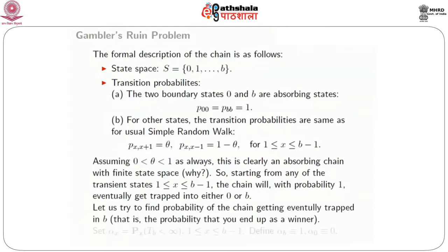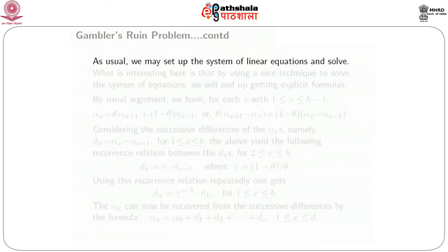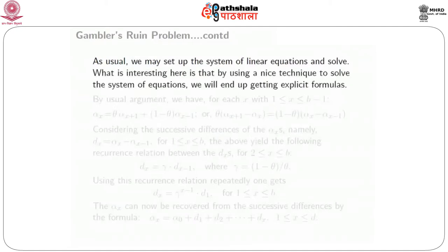Let us find the probability of the chain getting eventually absorbed at b — which means you end up as a winner with net capital b. Set α_x to be the probability that T_b is finite, i.e., the hitting time of b is finite, for x between 1 and b−1. For completeness, define α_b = 1 and α_0 = 0 as boundary conditions. We set up a system of linear equations as for any finite state space absorbing chain to solve for these quantities α_x.